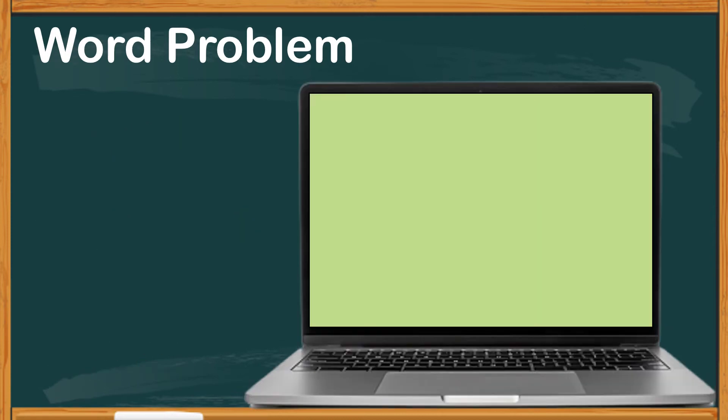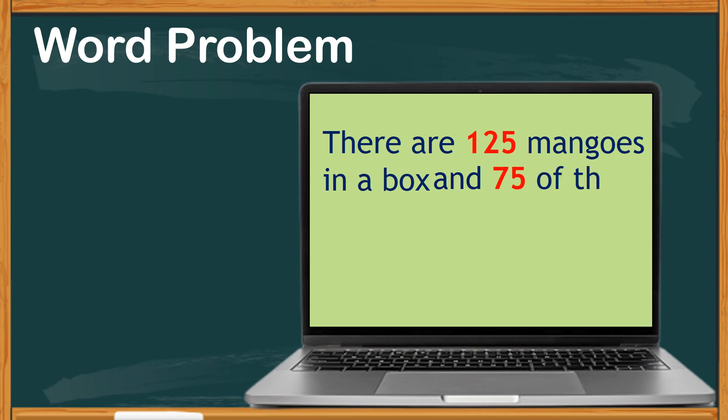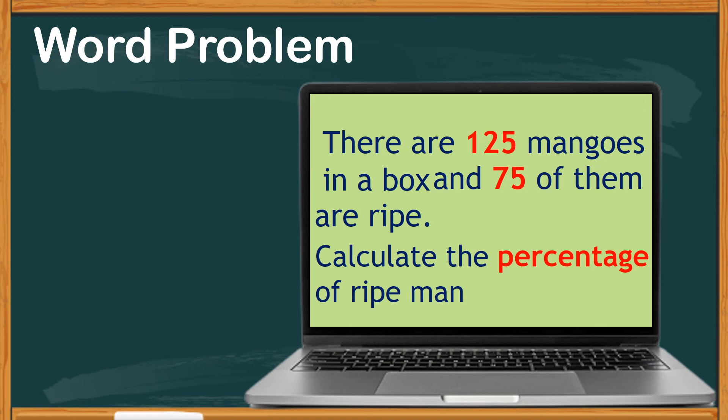Here is another problem. There are 125 mangoes in a box and 75 of them are ripe. Calculate the percentage of ripe mangoes. Let's simplify the problem to better understand what is being asked. It says 75 ripe mangoes out of the total number of mangoes, which is 125. Then calculate the percentage.